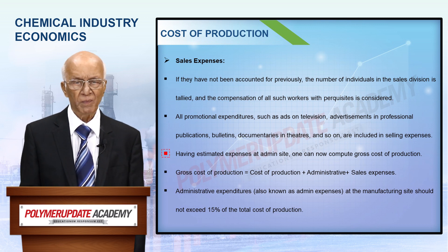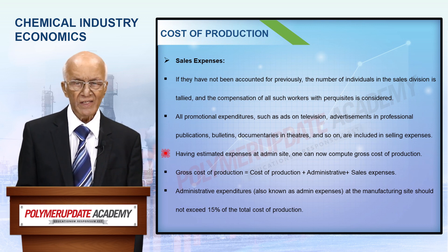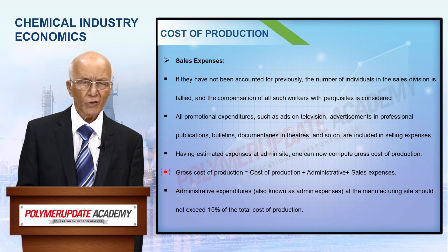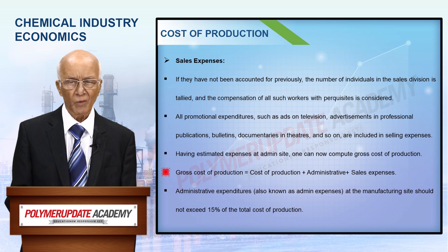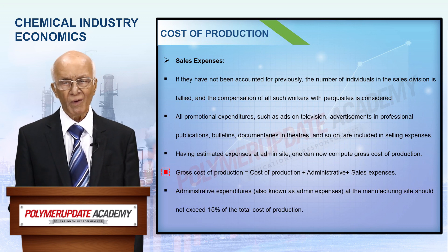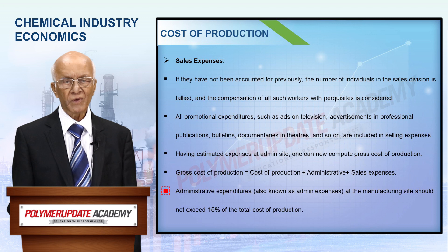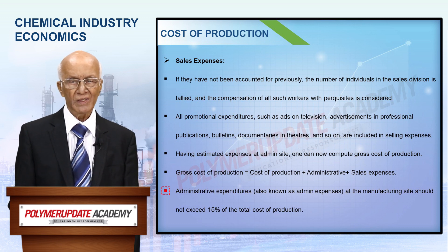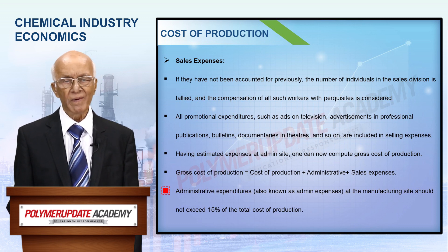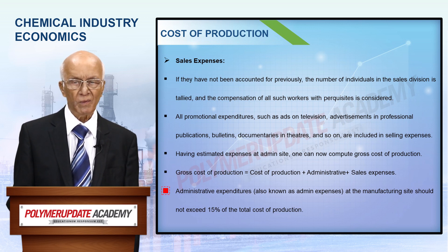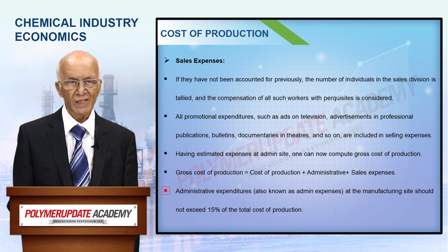Having estimated expenses at the admin site, one can now compute gross cost of production. Gross cost of production equals cost of production plus administrative expenses plus sales expenses. As a rule of thumb, administrative expenses — often known as admin expenses — do not exceed 15% of the cost of production at the production site.